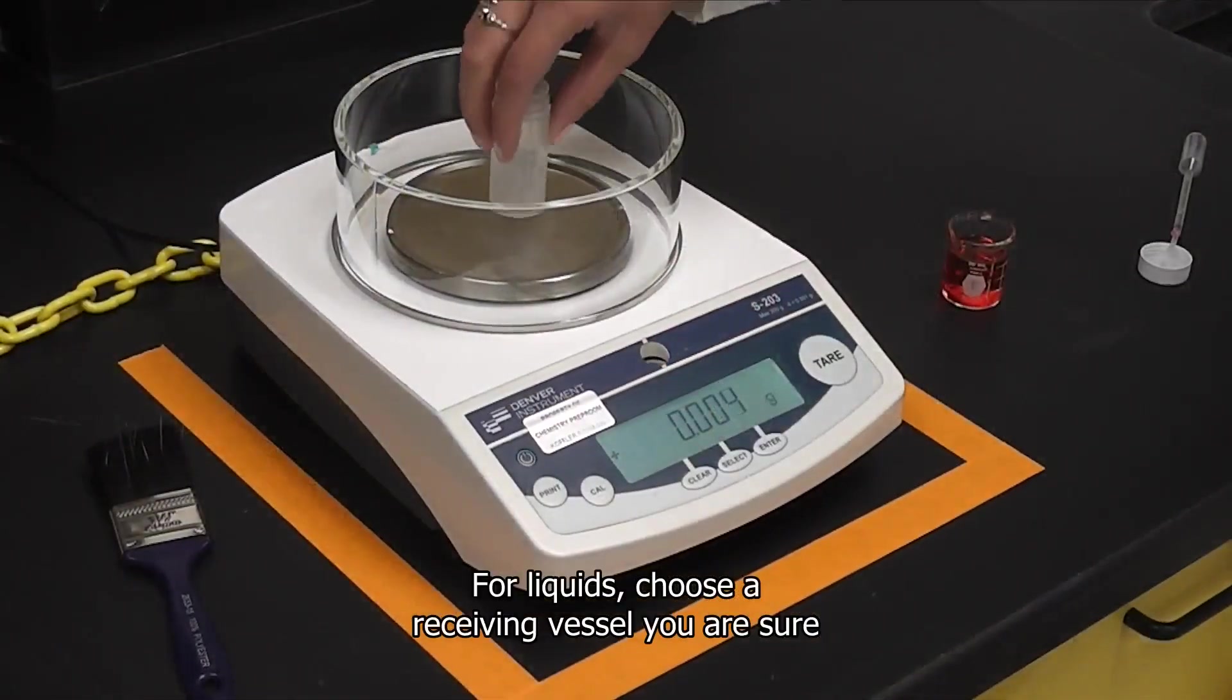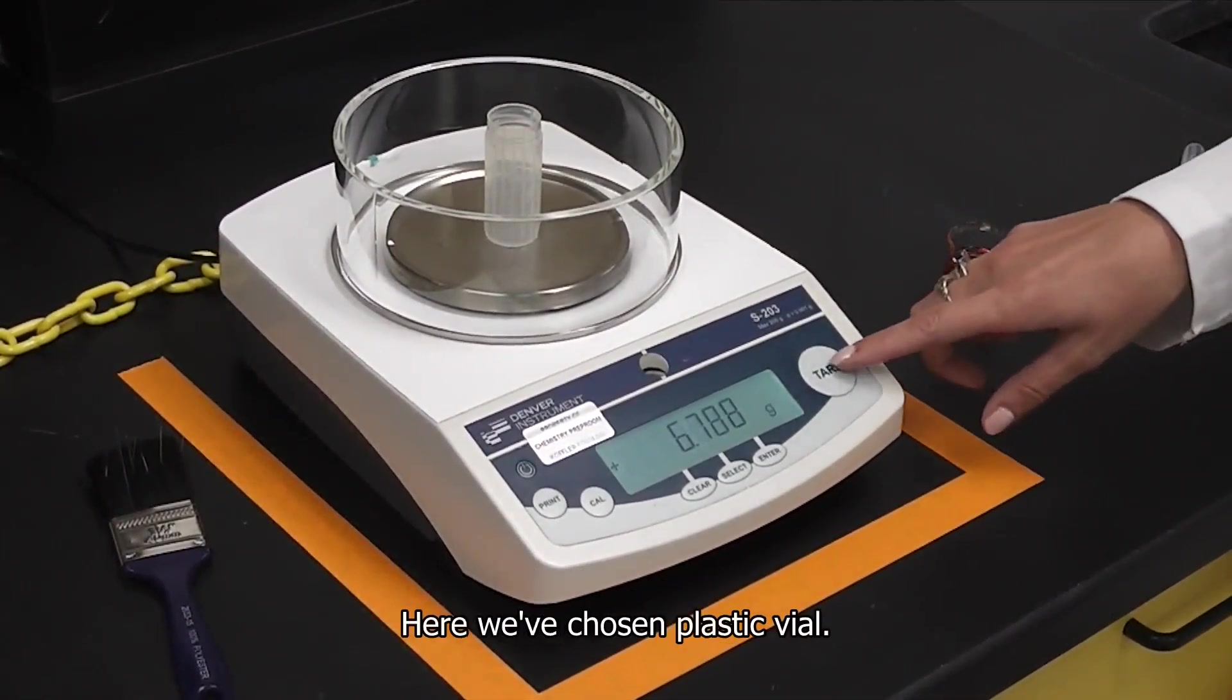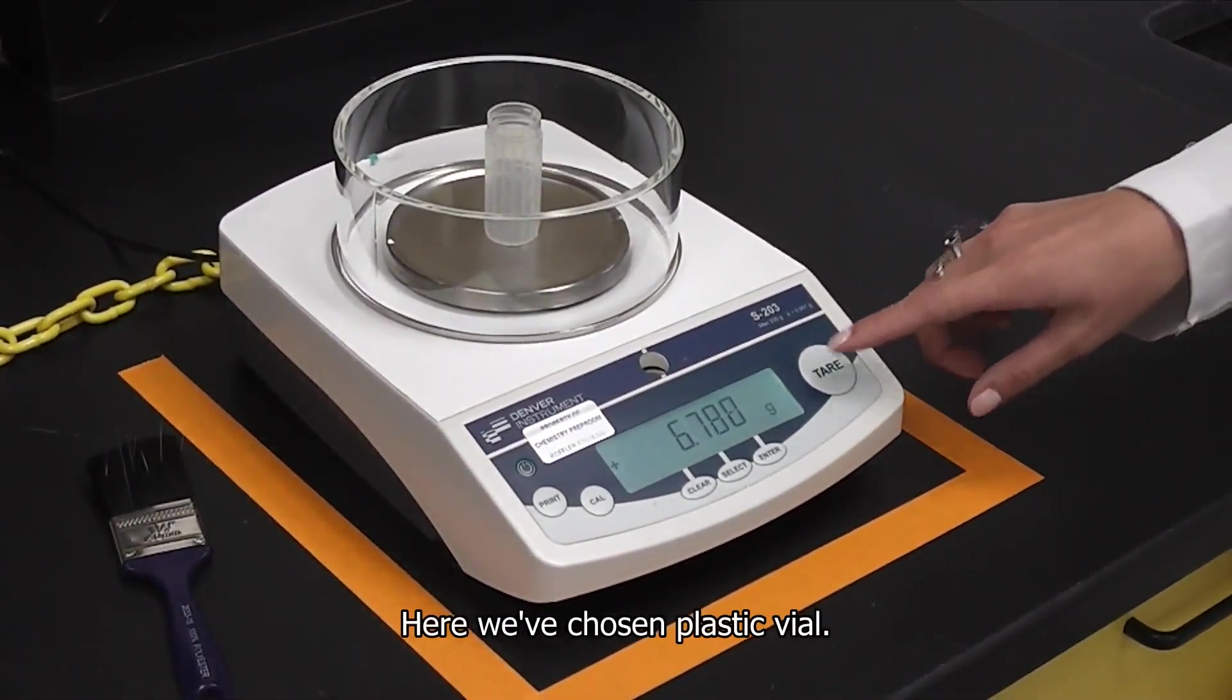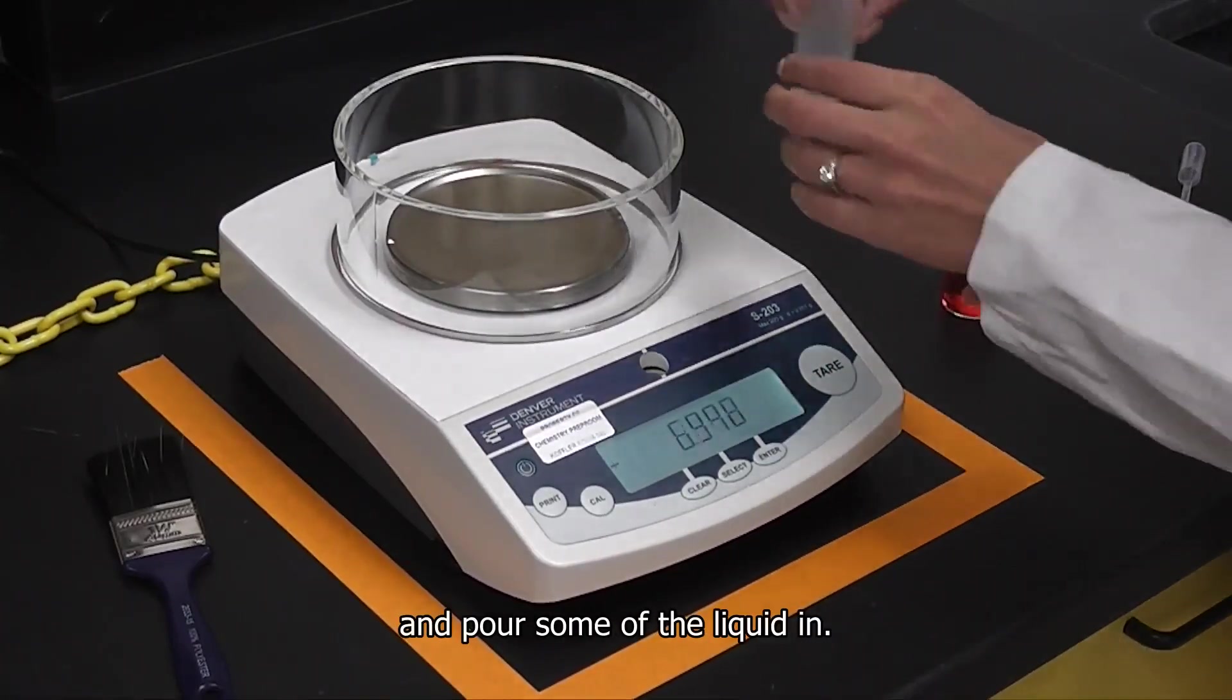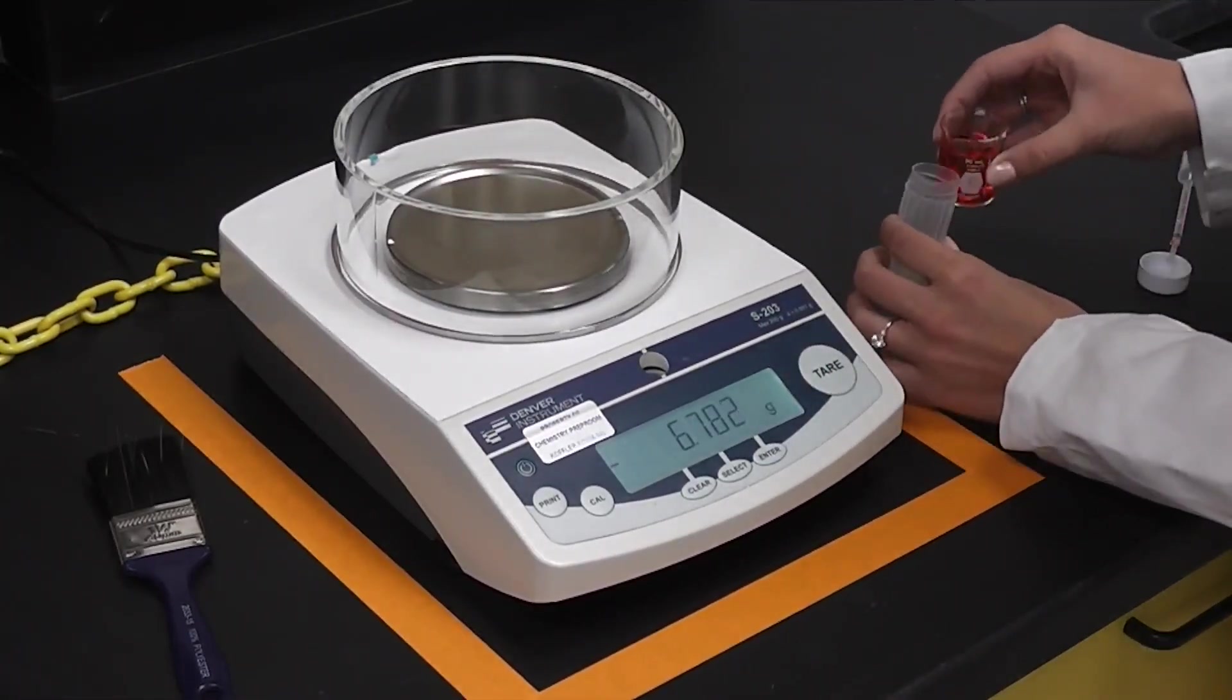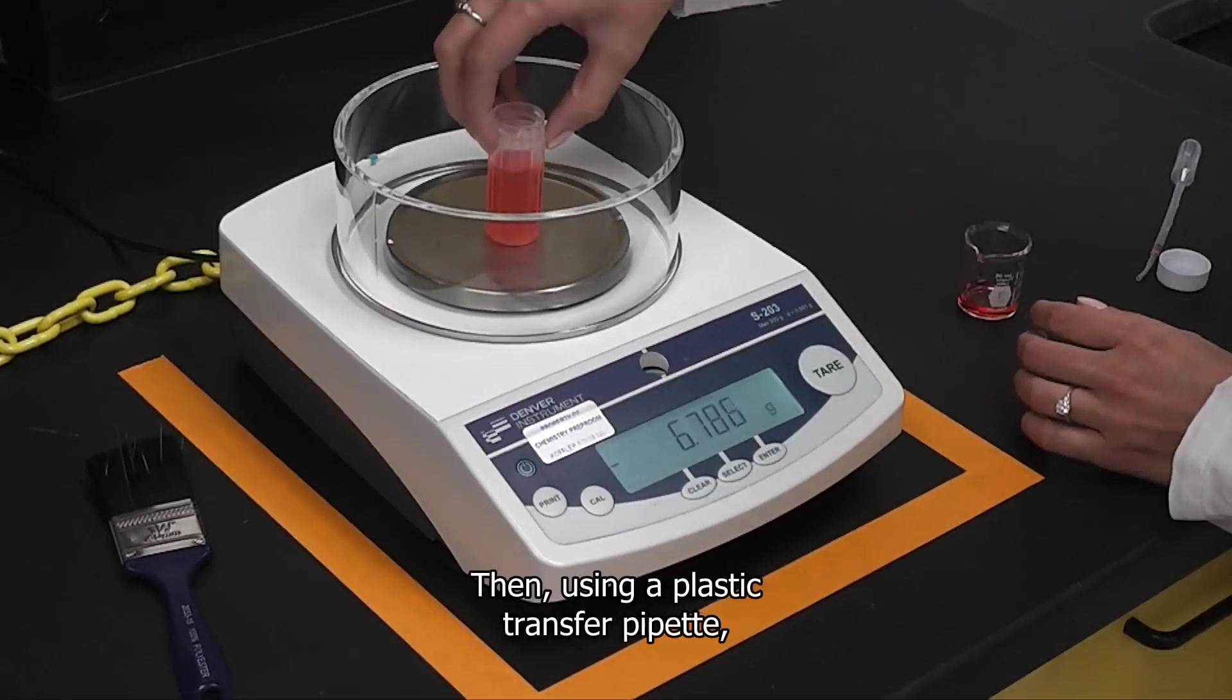For liquids, choose a receiving vessel you are sure will hold the amount you want to weigh out. Here we have chosen a plastic vial. Tare the balance, remove the vessel and pour some of the liquid in. Put the vial back on the balance.